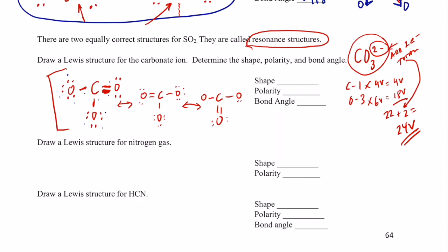So we end up with this guy. Now we can close up our bracket and put 2- on the outside. So all three of these structures would represent the carbonate ion. That double bond is shared in all three places simultaneously.